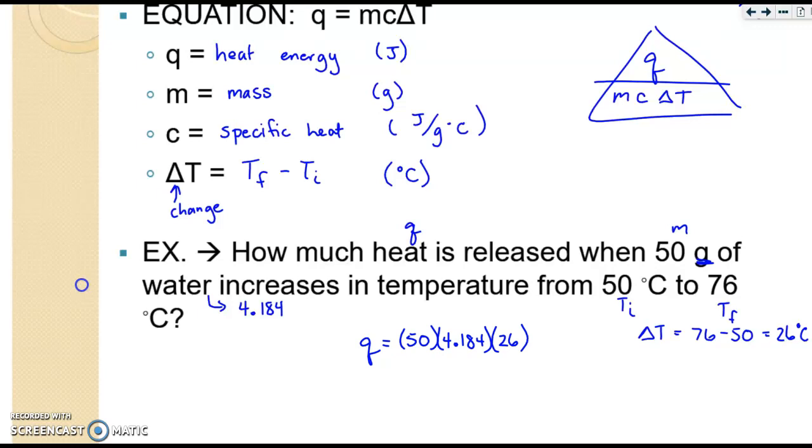And when I solve this out and round for significant figures, which is only one, so not very good, you initially get this, which you would have to round down to 5000. And the unit of course is joules because we're looking for q.